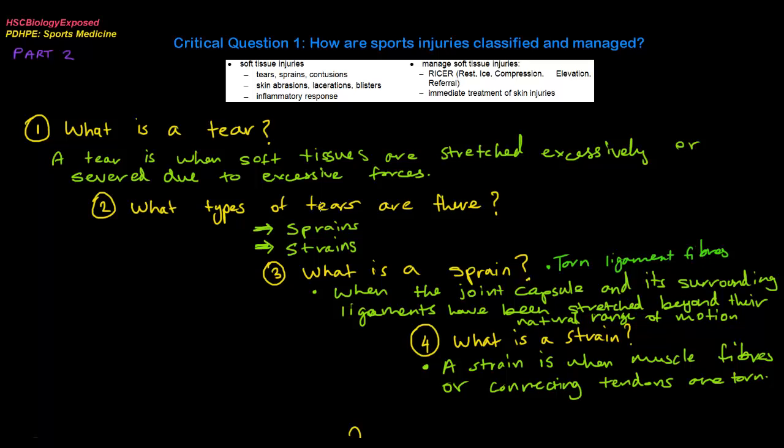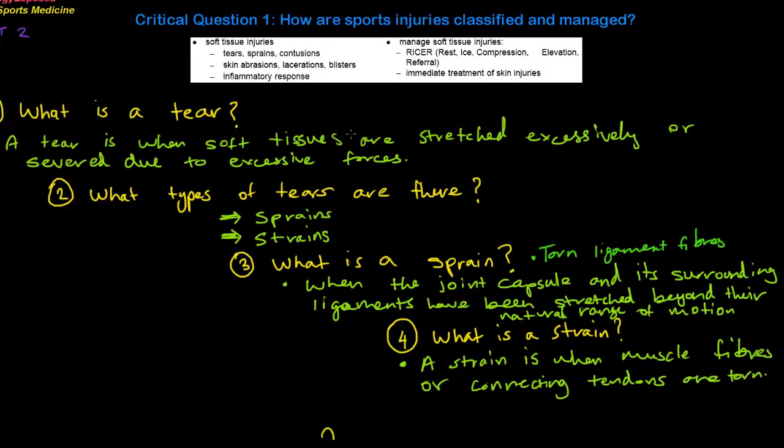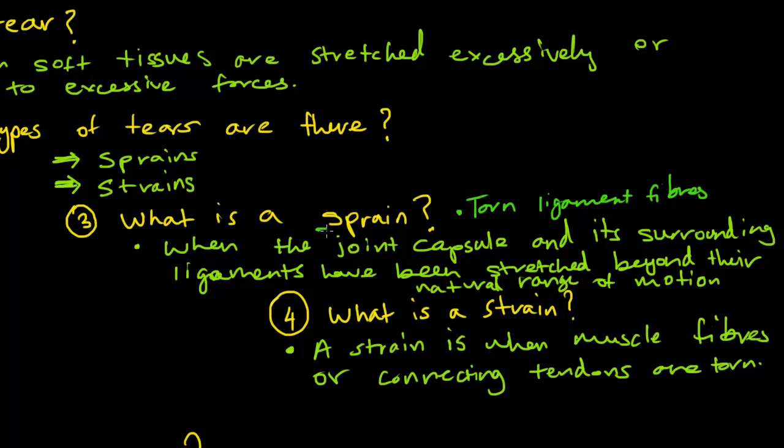There are two types of tears: sprains and strains. First, I'll tell you what a sprain is. A sprain is basically a torn ligament fiber. It happens when the joint capsule and its surrounding ligaments have been stretched beyond their natural range of motion.